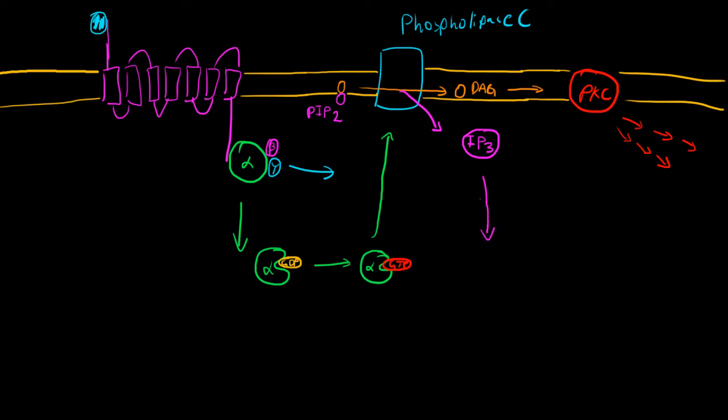At the same time, IP3 is swinging down, and it's going to bind to a particular receptor which sits on the membrane of the endoplasmic reticulum. We call this receptor the IP3 receptor, very creatively. So once this IP3 binds to this receptor, this is a ligand-gated ion channel. Once IP3 binds, we get this release of calcium from within the ER, the endoplasmic reticulum.